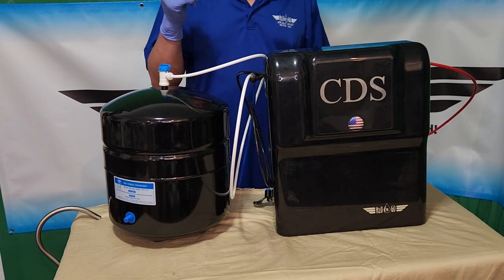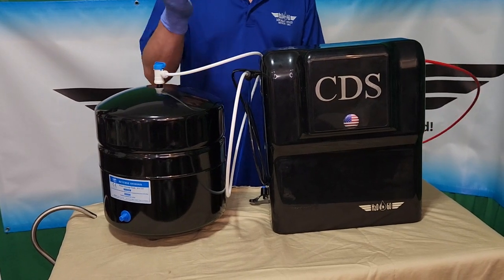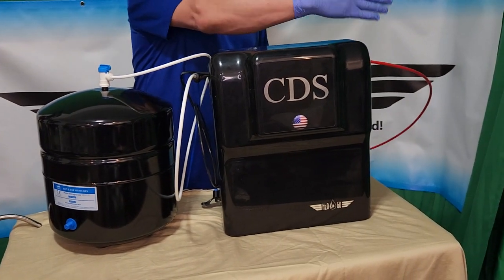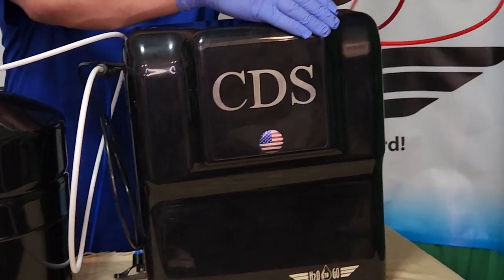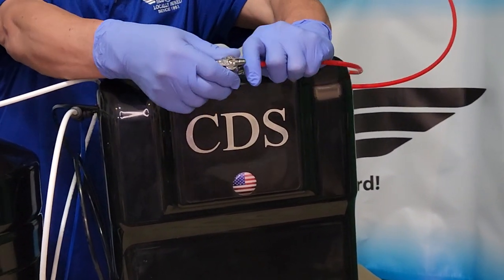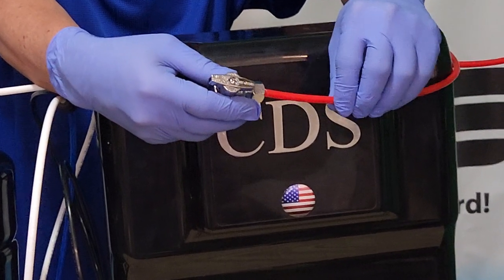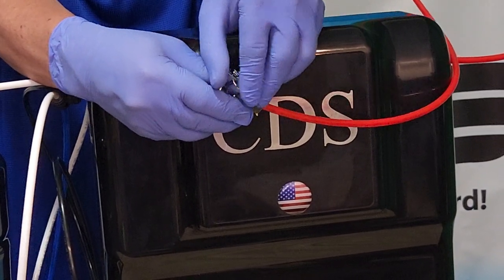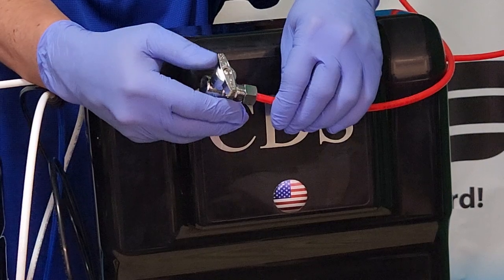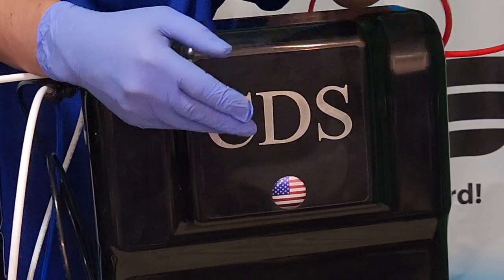First thing you want to do is shut the water off to the system. You find the red tubing, follow it back against the wall. You'll find something like this. This is what the builder put in. When this is going with the tube, that's on. When it goes across the tube, that's off. You want to do that.